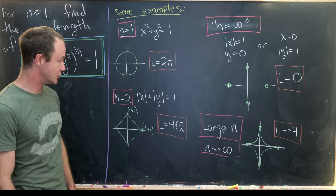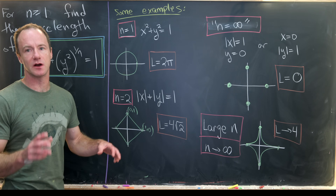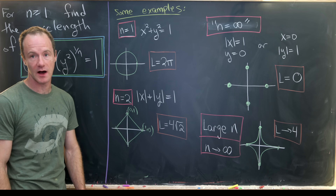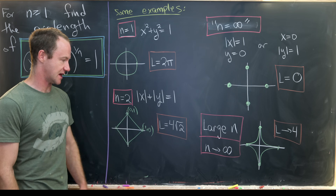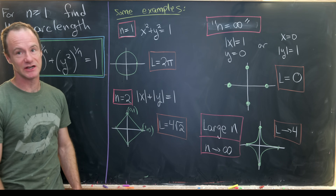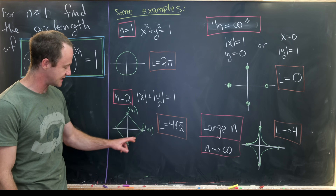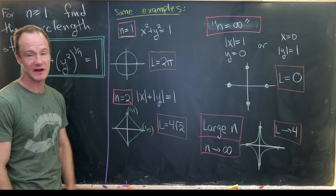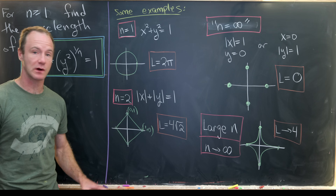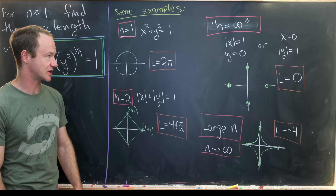For n=2, we're taking the square root of x² and the square root of y², which gives us the absolute value of x and the absolute value of y. If we add those and require that they equal 1, we get a square rotated on its side — a diamond shape. Each side has the same length by symmetry, and you can easily calculate that each has length √2, so our arc length is 4√2.